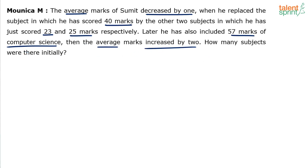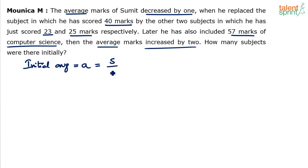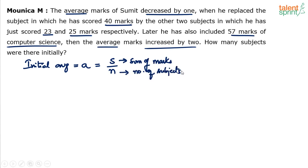We need to find the number of subjects that were there initially. It's all about framing the right equations using the given data and then solving them. Let's assume the initial average is A. Average equals sum of all marks divided by number of subjects. Let's assume the number of subjects is N. So, average A equals S divided by N.